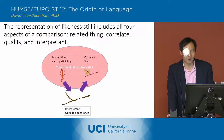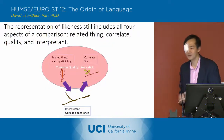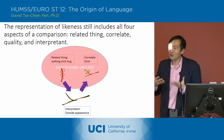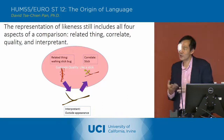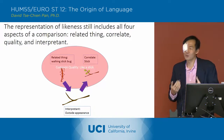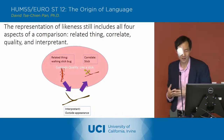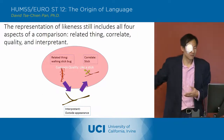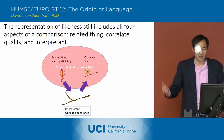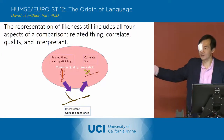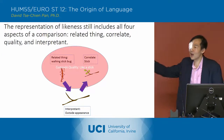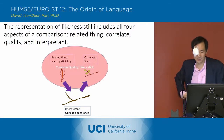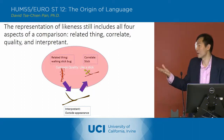If you want to diagram what's going on, in fact all four pieces of a comparison do exist. Because there is a related thing, which is the walking stick bug. There is the correlate, which is the stick. There is the common quality — being like a stick. And there is an interpretant.